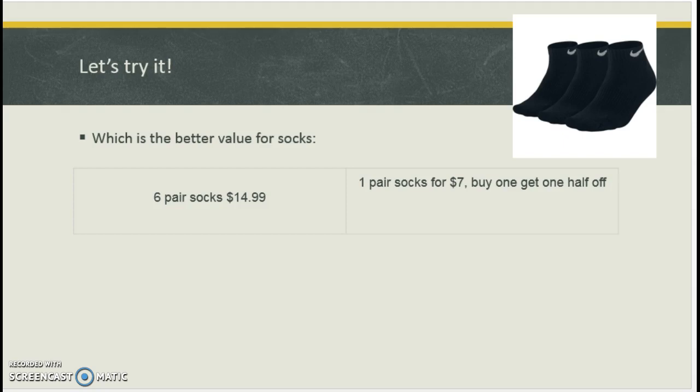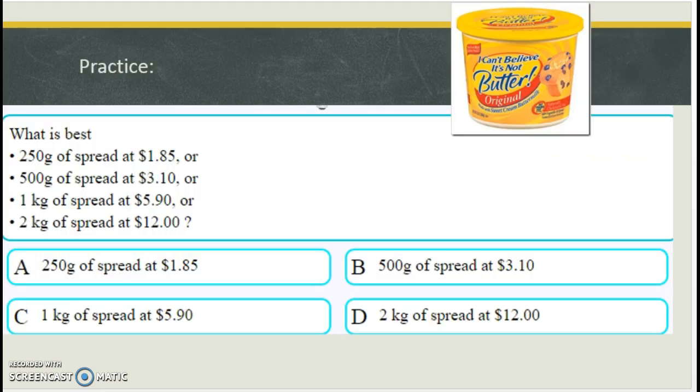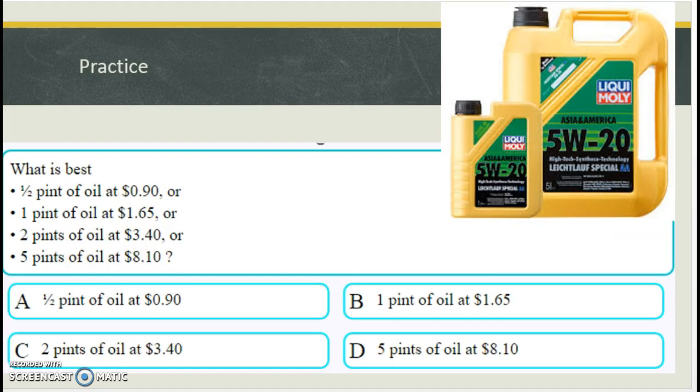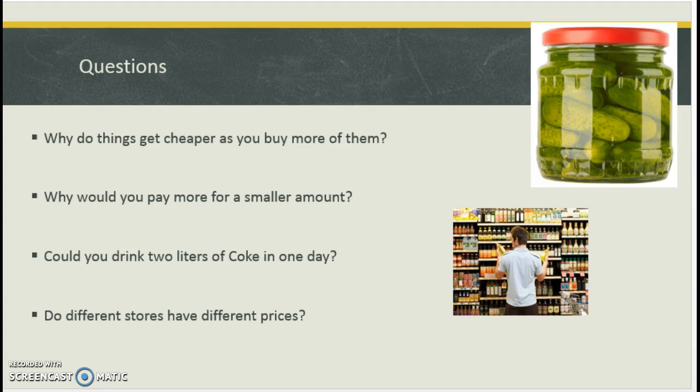So some questions we're going to have. And these will be some of your assignments. Six pairs of socks for $14.99. Or buy one pair of socks, get the other half off. And these will show up down below. So take some time. Familiarize yourself with these.